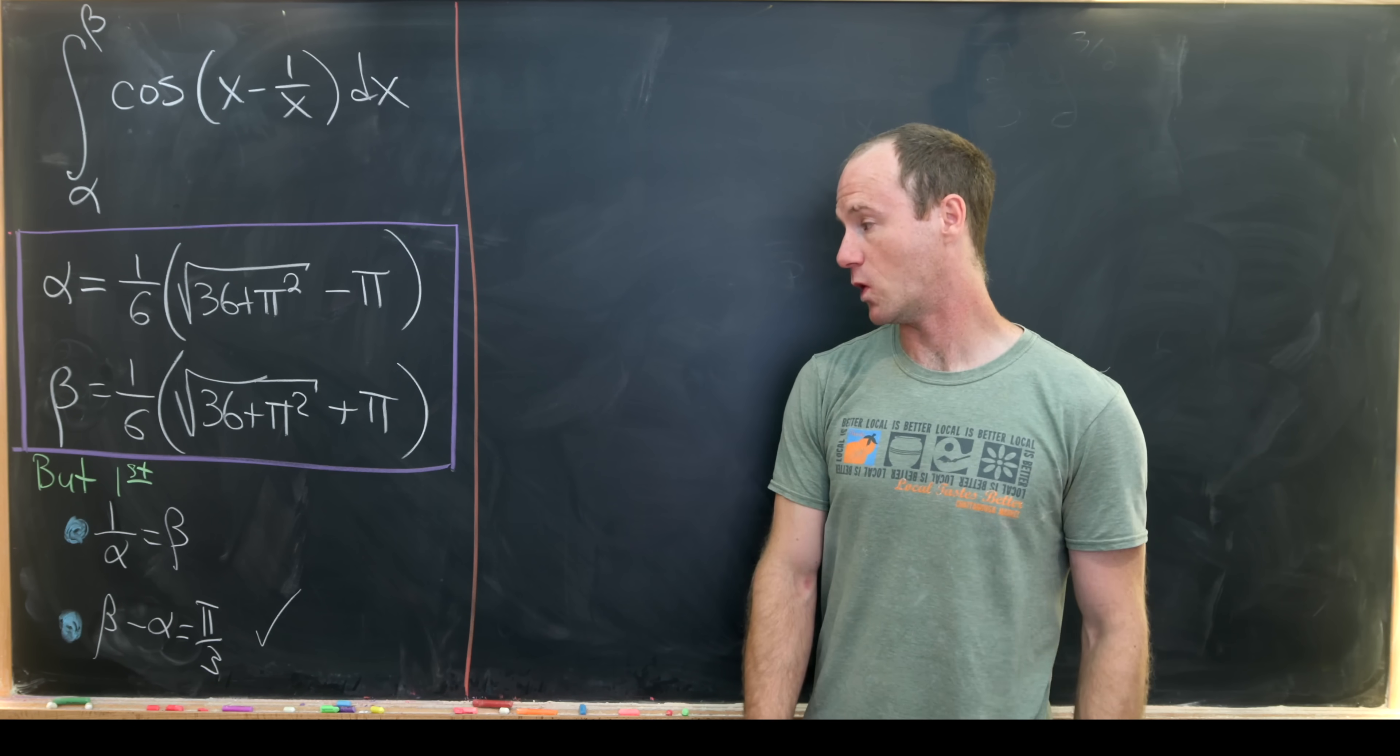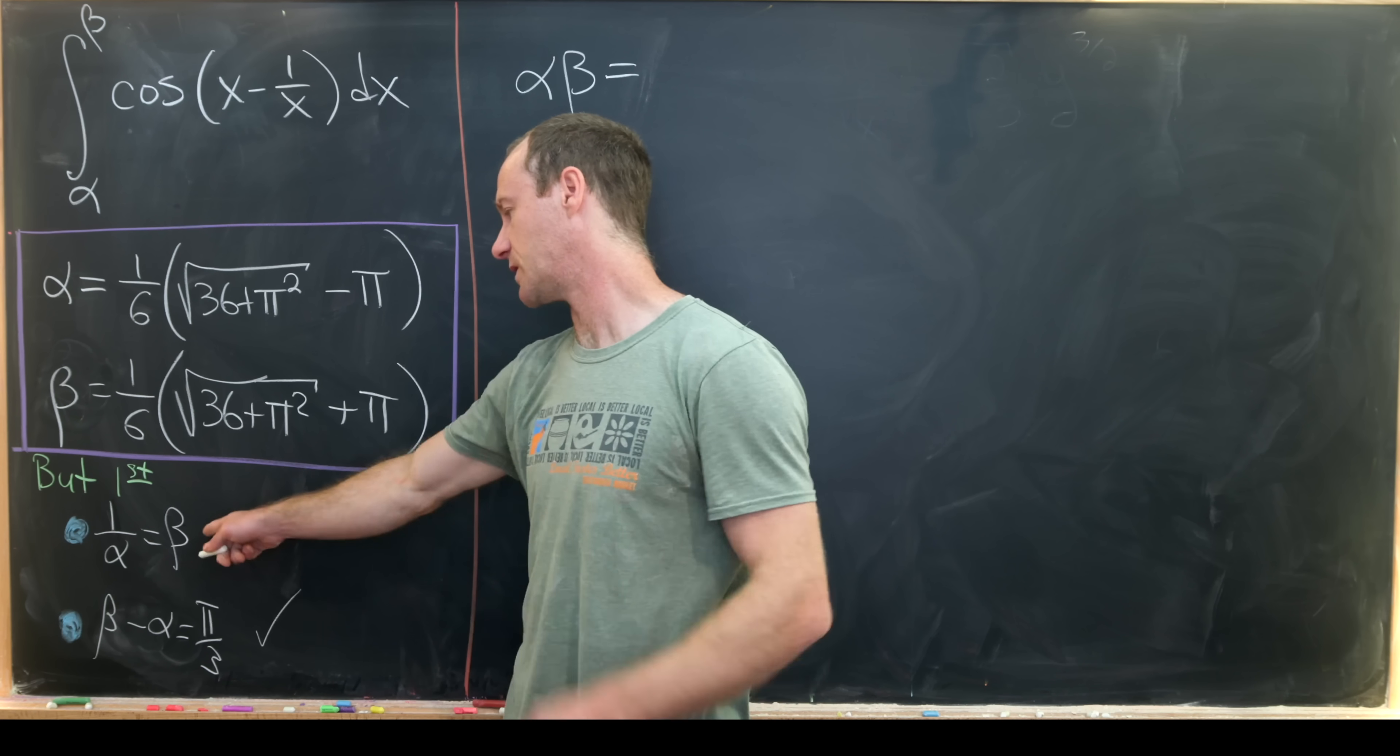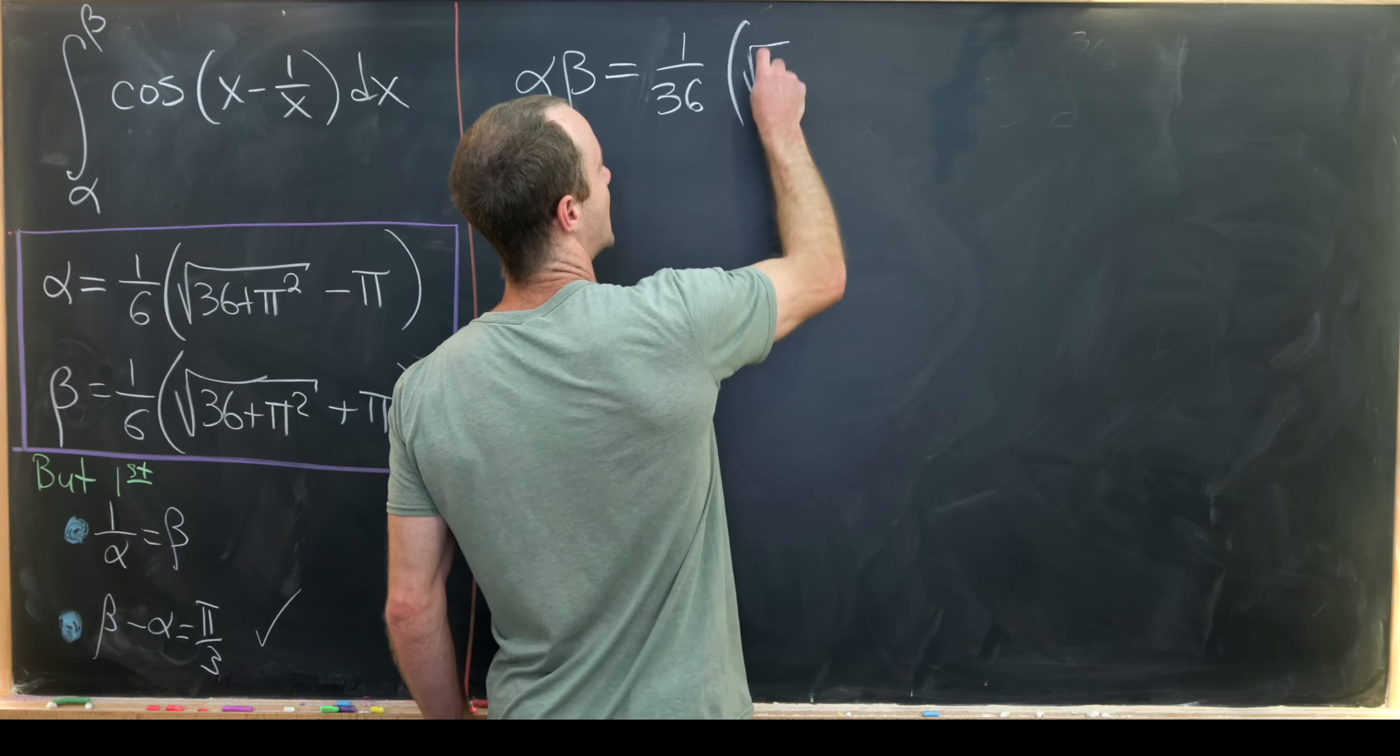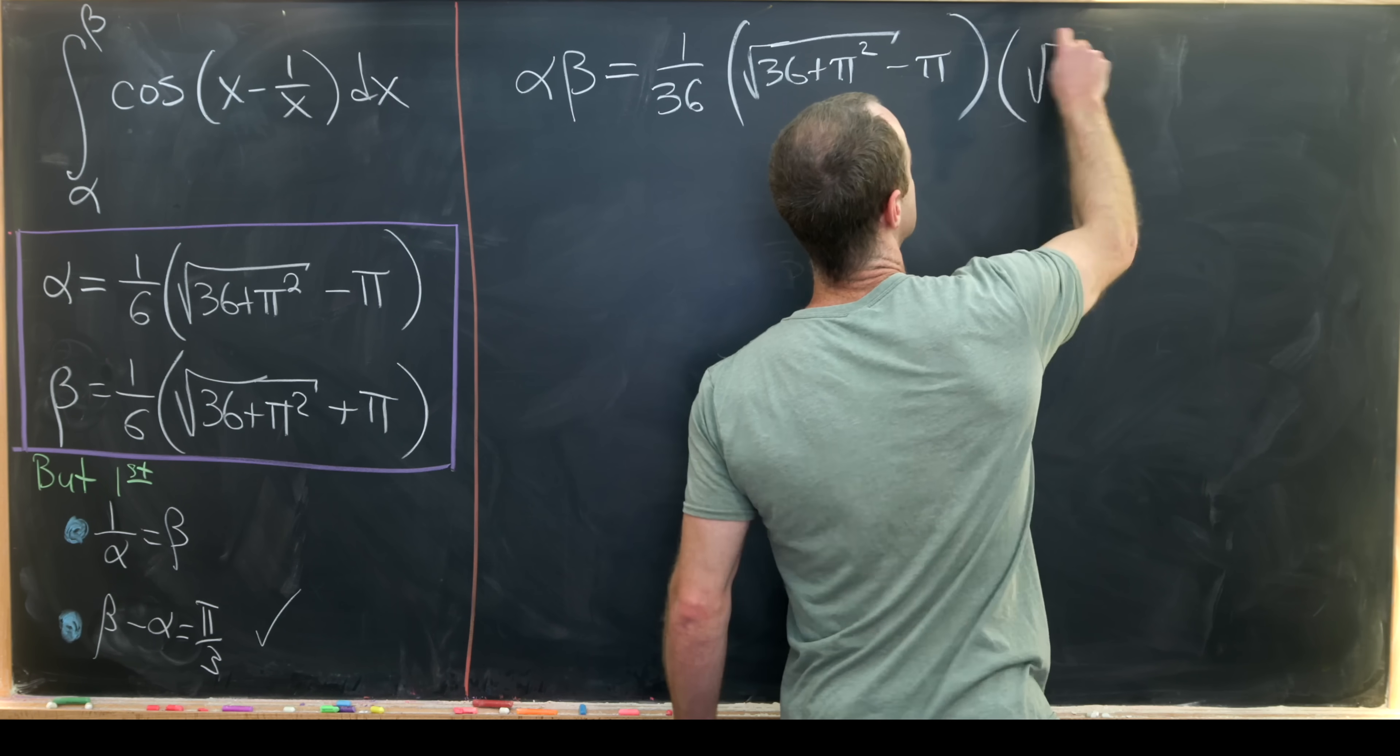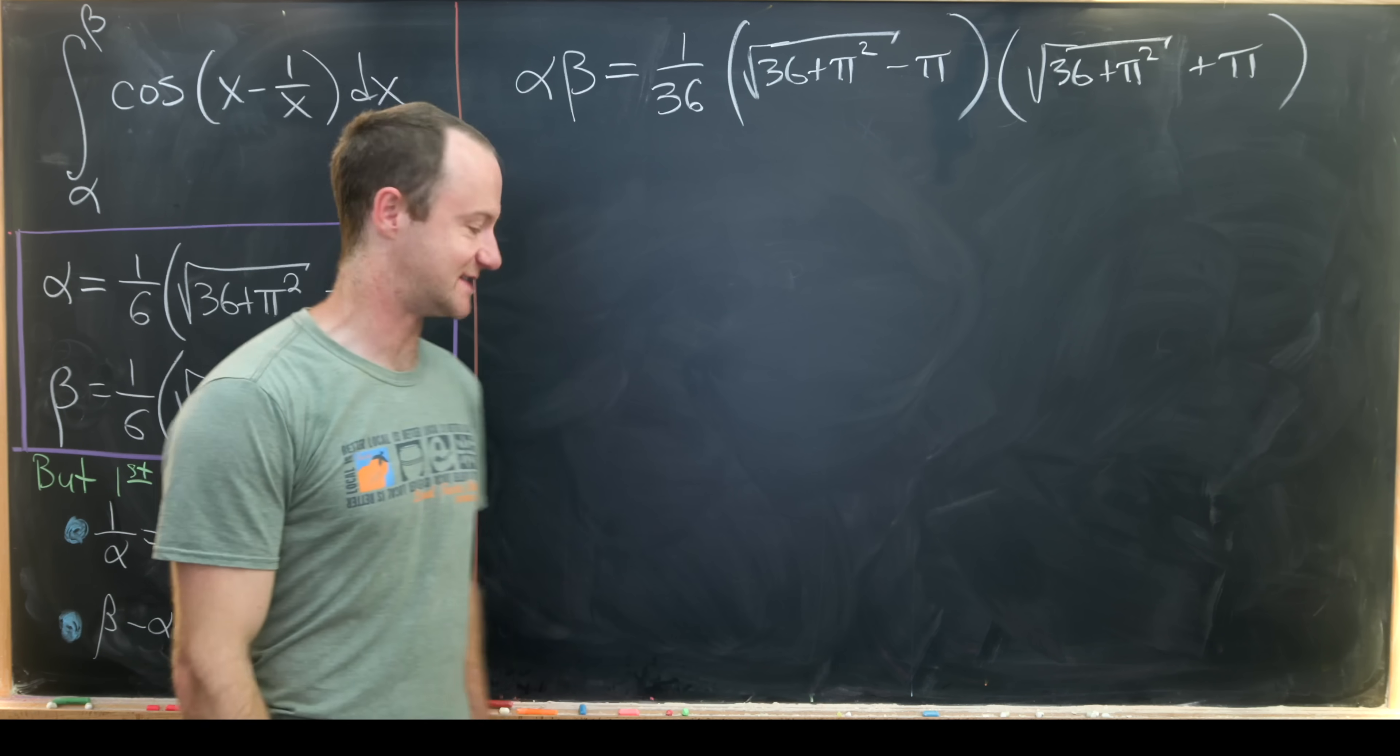Now let's move on to this: 1 over alpha equals beta. And we'll do this just by calculating alpha times beta, and hopefully we'll get the number 1 which will imply this. So notice that alpha times beta will be 1 over 36, and then we'll have the square root of 36 plus pi squared minus pi times the square root of 36 plus pi squared plus pi.